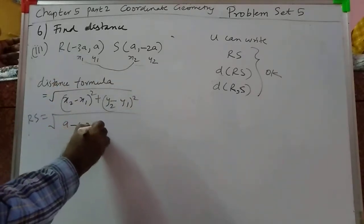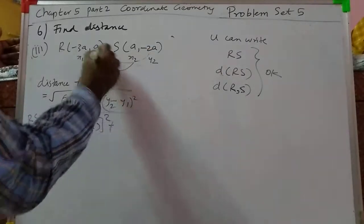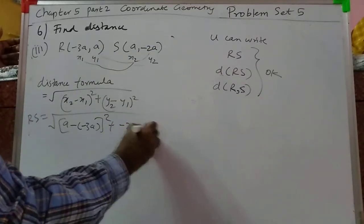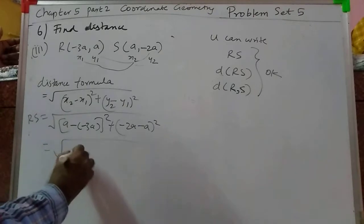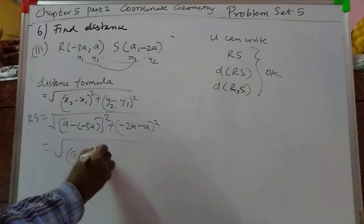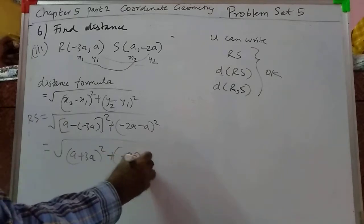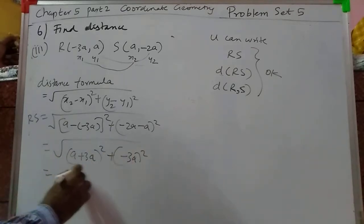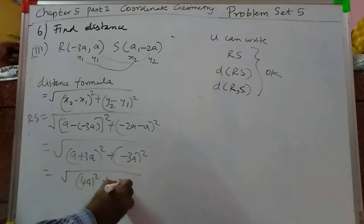It becomes a minus of minus 3a, the whole square, plus minus 2a minus a, the whole square. So that becomes a plus 3a, the whole square, which is 4a the whole square. And minus 2a minus a gives minus 3a, the whole square.